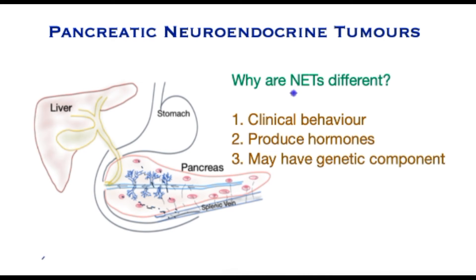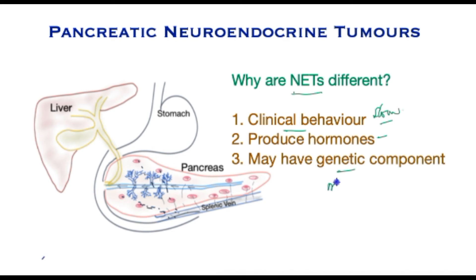NETs, as they are often called, are different for three main reasons. Firstly, the clinical behaviour is a wide spectrum and the majority are quite slow growing, so it may be years before they come to light — they do not normally behave like the common variety of cancers in the pancreas. No other cancers produce hormones or chemically active compounds, and NETs have the propensity of doing so. And finally, there is a genetic component: some neuroendocrine tumours form clusters in families, called multiple endocrine neoplasia, which may involve tumours at multiple sites such as the pancreas, the pituitary, and the parathyroid gland.